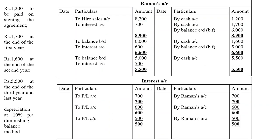Now let us see how to work out ledger accounts in the books of the hire vendor. The first account is Raman's account — that is the hire purchaser's account. In the first year, we have four entries, but now from the hire vendor's point of view as the seller: the asset is sold, down payment is received, interest becomes due, and the first installment amount is received.